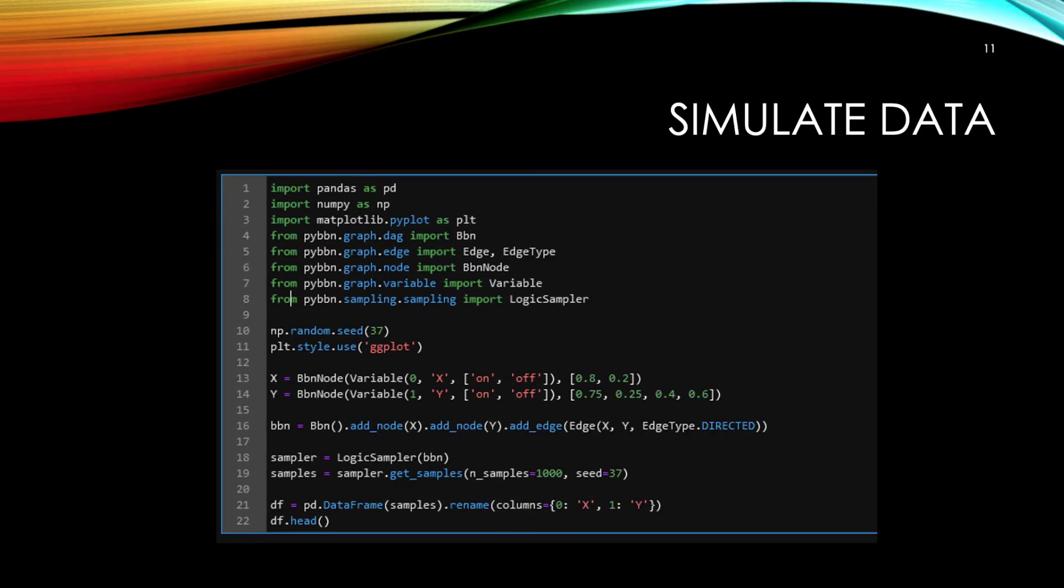Here, I'm creating a Bayesian belief network using PyBBN. Note how A is the cause and B is the effect. I sampled the values A and B using logic sampling. The inner workings of sampling is not difficult, but I won't go into details here. I'm just showing you how the sampling of data was done. Note how I put the sample data into a Pandas data frame.